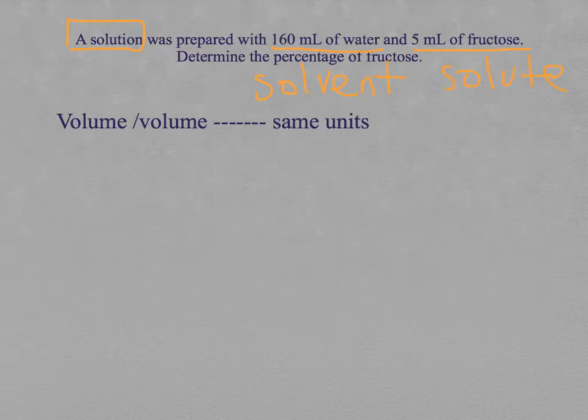It means that in order to get the hundred percent, we need to add both numbers. So, it will be one hundred sixty milliliters of the solvent, plus five milliliters of the solute, will give one hundred and sixty-five milliliters. Pay attention with this.